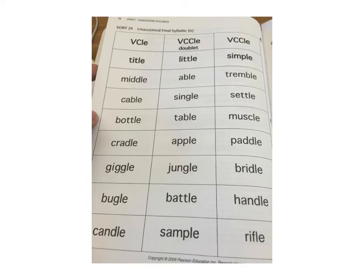Alright, this sort is Sort 29: unaccented final syllables with the L-E in the words. And in this case, we're going to be looking specifically at the following words. So go ahead and look through them and see what you notice about those words. You can pause the video and do that.